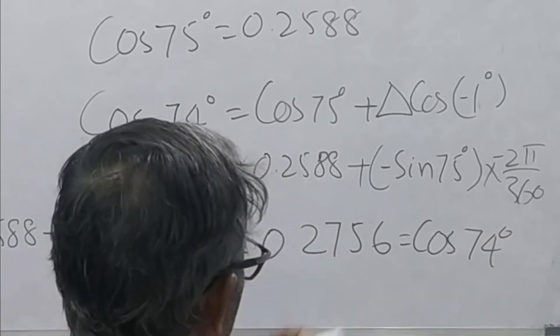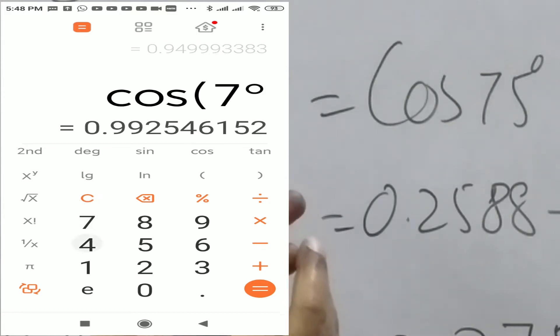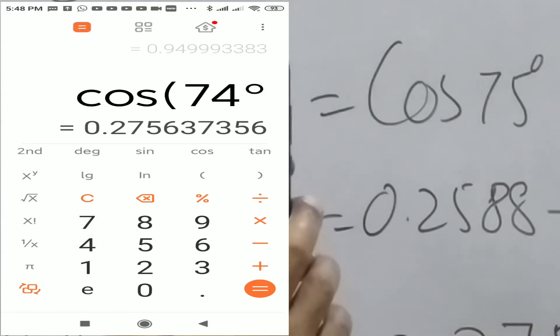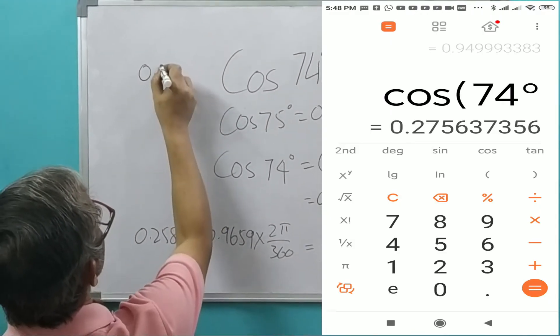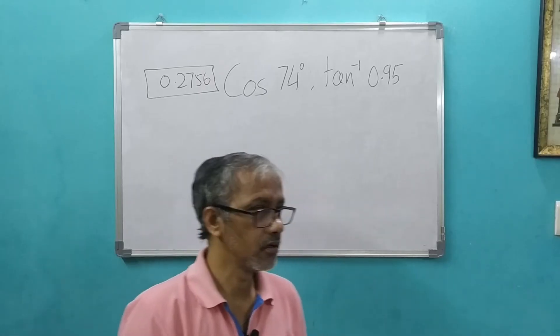So we will check it in the calculator. Cos 74. Okay, it is perfect. 0.2756.